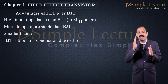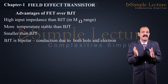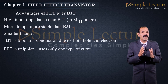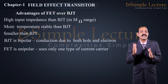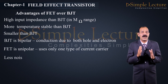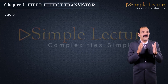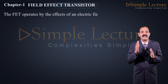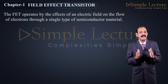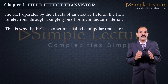BJT is bipolar — conduction is due to both holes and electrons, i.e., majority and minority charge carriers. But FET is unipolar and uses only one type of current carrier. FET also has less noise compared to BJT. The FET operates by the effect of an electric field on the flow of electrons through a single type of semiconductor material, which is why FET is sometimes called a unipolar transistor.